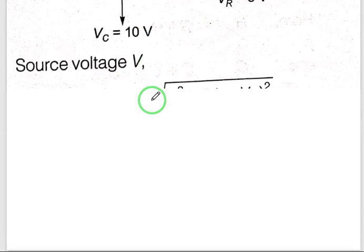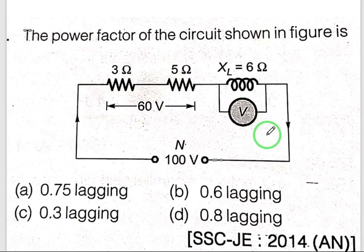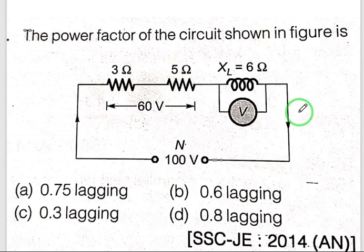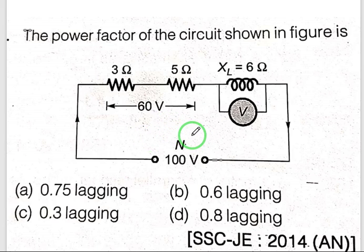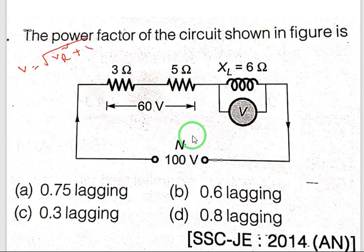Hope you understood clearly. Next question: the power factor of a circuit shown in the figure is to be found. Using the traditional method, voltage is given. The input voltage V equals root over VR squared plus VL minus VC whole square. VR is 60, capacitor is not given so VC is 0, giving V equals root over 60 squared plus VL squared. V is 100, so 100 squared equals 60 squared plus VL squared.